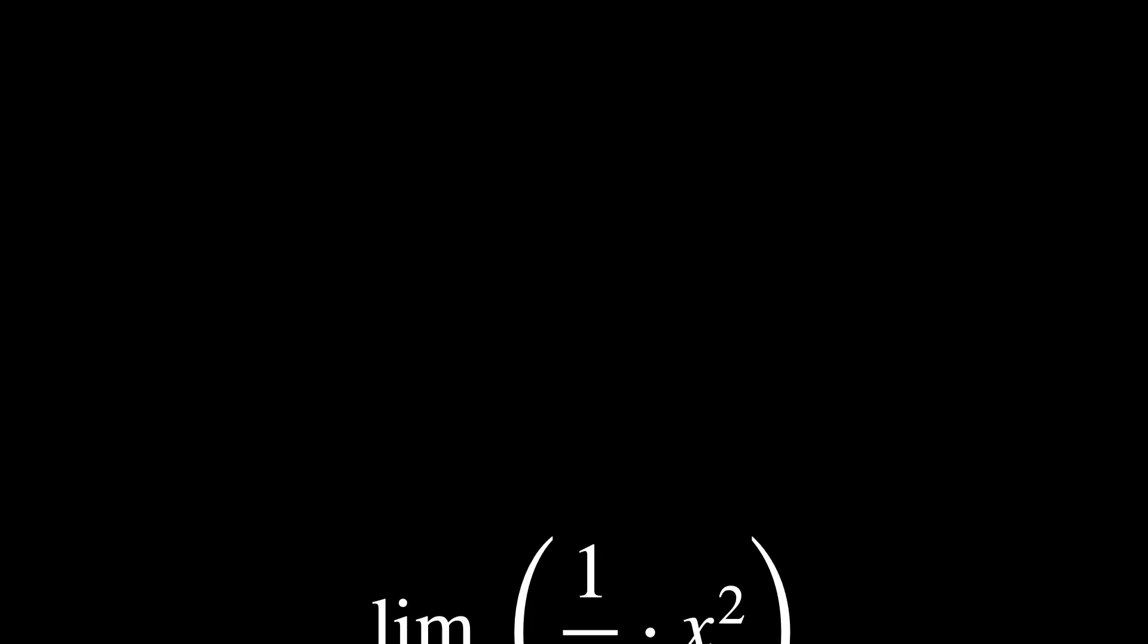The core issue with 0 times infinity is that you have one factor shrinking towards non-existence, while the other expands without bound. Depending on the rates at which these changes occur, the product might converge to a finite number, remain 0, or even grow to infinity.